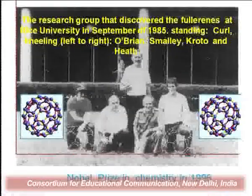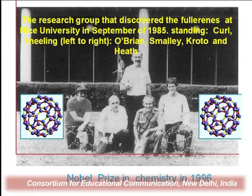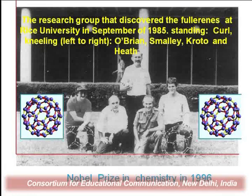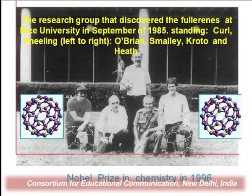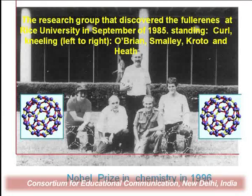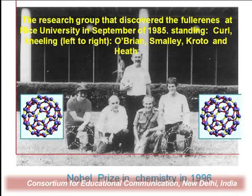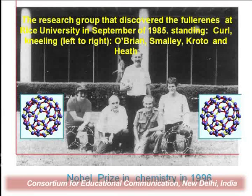Here we see the laboratory where Buckminster Fullerene was discovered. In 1985, scientists took a mass spectrometry of carbon atom particles. Mass spectrometry revealed that fullerene is a family of carbon atoms containing most of the carbon allotropes. Molecules from C60, C20 up to C540 were formed in carbon clusters. This group of scientists discovered Buckminster Fullerene and received the Nobel Prize in 1996.